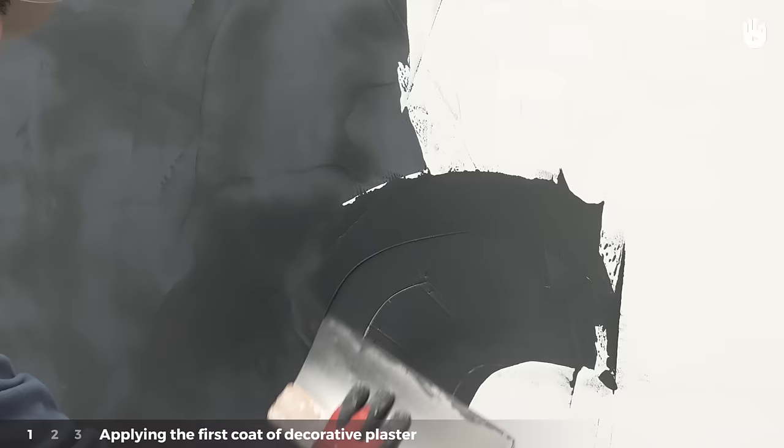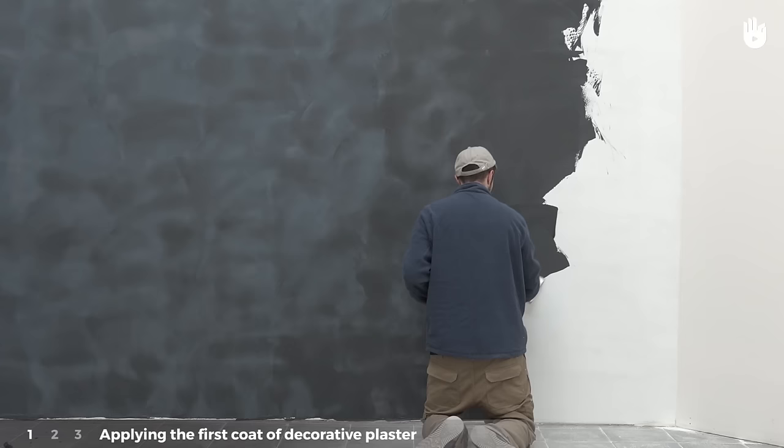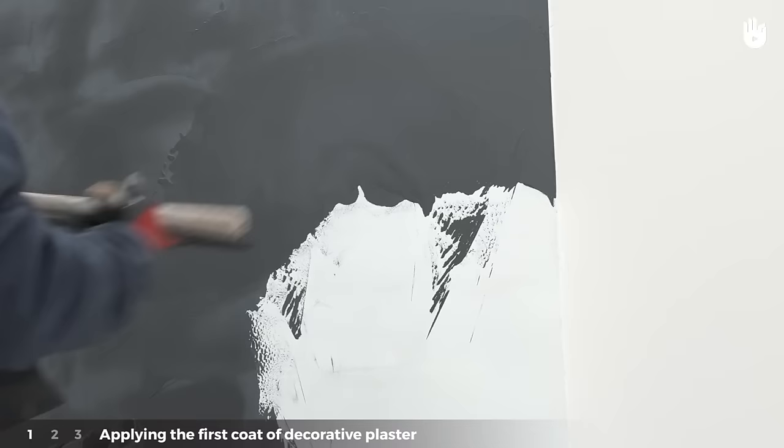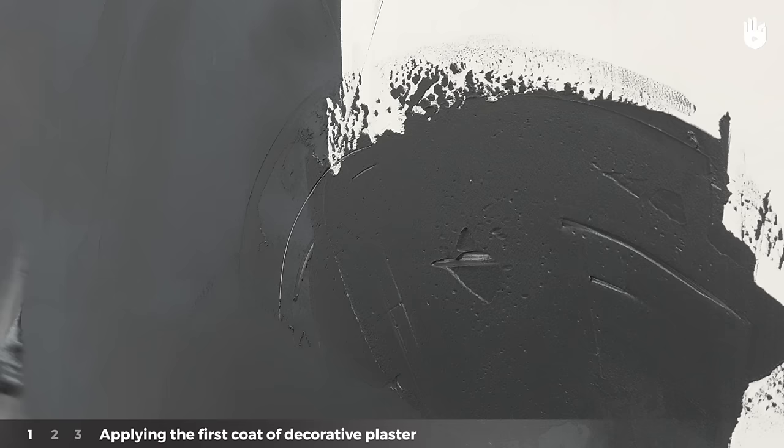If there is too much plaster, small lumps will appear. If this happens you will need to scrape off the excess. At this stage the plaster coating does not need to be completely smooth.